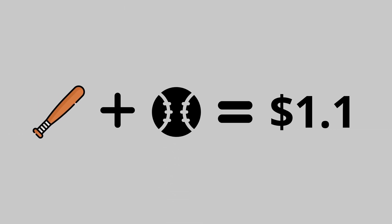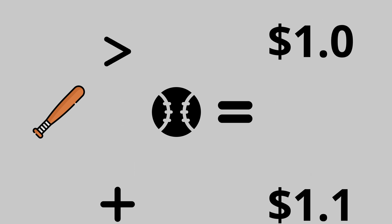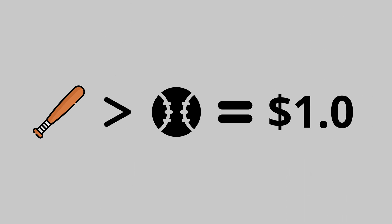A bat and a ball cost $1.10 in total. The bat costs one dollar more than the ball. How much does the ball cost? Well, if you answered 10 cents, that's absolutely wrong. You don't need any coding languages for this — neither Python nor SQL. It was just a basic math question, but we went with our intuition and said 10 cents.